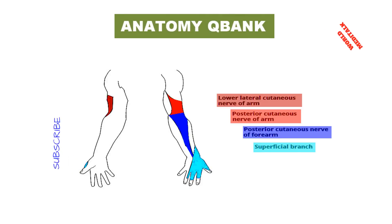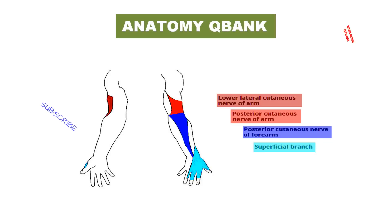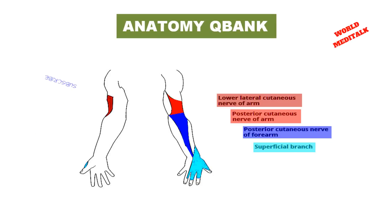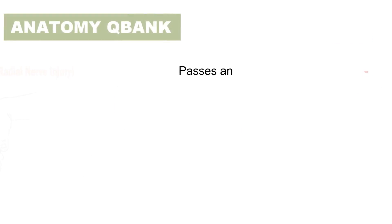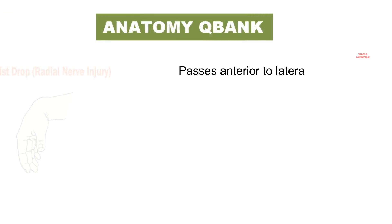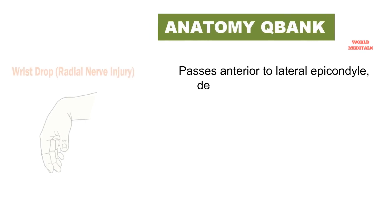Radial neuropathy typically presents with weakness of wrist dorsiflexion, also called wrist drop, and finger extension. If the lesion is in the axilla, all radial innervated muscles are involved. The triceps and brachioradialis reflexes are decreased, and decreased sensation occurs over the triceps, the posterior part of the forearm, and dorsum of the hand.